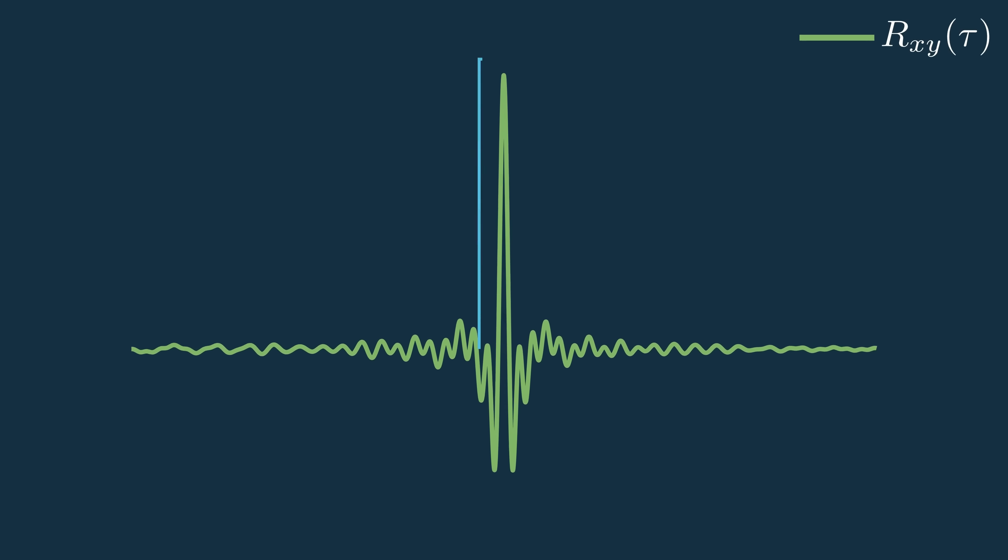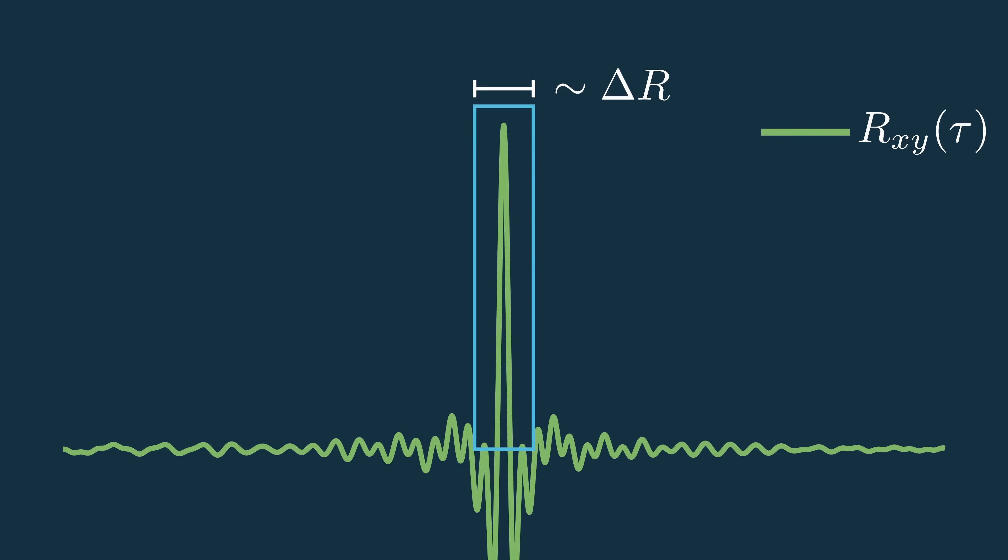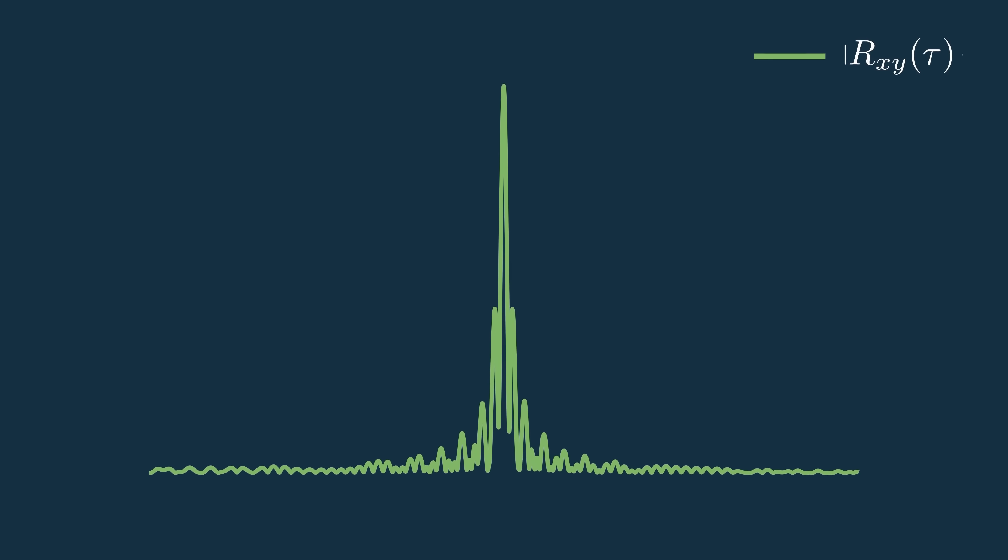The effect this main lobe has on our detection is pretty obvious, because its width is just the range resolution we've been talking about this whole video. These side lobes on the other hand have a less obvious effect on the system, and normally it helps to plot the absolute value of the matched filter output because it makes it simpler to see the effect of our design choices like bandwidth.